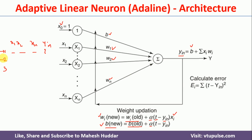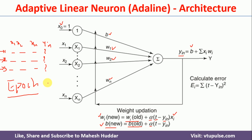Once we are done with the first example, we give the second example as input, calculate yin again, and update the weights. The same thing is done for the third input. Once we complete all three inputs, we have completed one epoch. After processing each example, we calculate an individual error: e = summation of (t - yin) squared. So e1 is computed after the first input, e2 after the second, and e3 after the third. The sum of all these individual errors is the total error for that epoch.